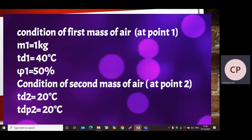Now we will write the conditions formally. For the first mass of air: m1 = 1 kg, td1 = 40°C, φ1 = 50%. For the second mass of air: td2 = 20°C and dew point temperature is also 20°C.